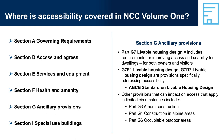Part G7, Livable Housing Design, includes requirements for improving access and usability for dwellings, for both owners and visitors. Section G7 is a specific performance requirement addressing accessibility. The DTS provision G7D2, Livable Housing Design, states that the ABCB standard on livable housing design must be complied with for compliance with G7D2, subject to the terms of the exemption applying to G7D2.